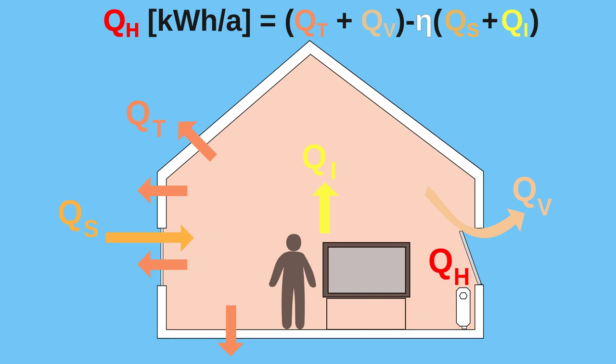But when it comes to energy use in your house, shrinking the loss side of our equation is a far better strategy than trying to increase gains to get to a nearly zero heating requirement.